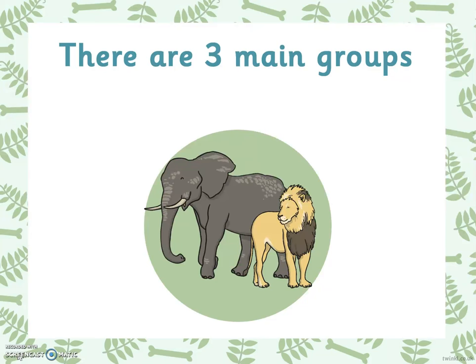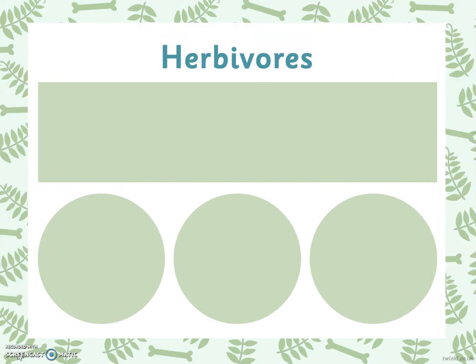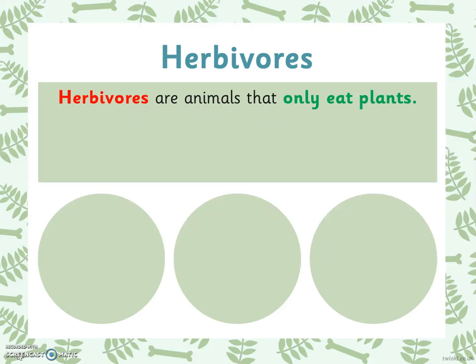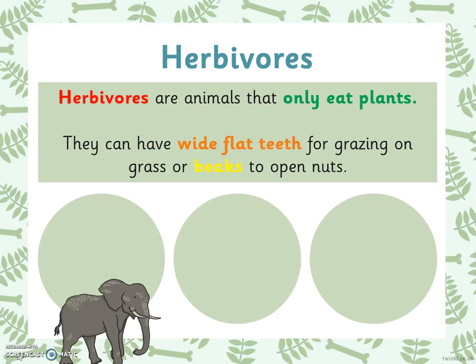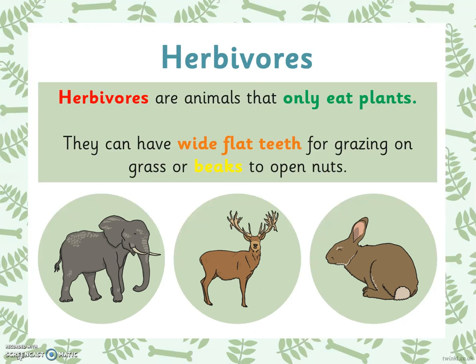There are three main groups. The first group are called herbivores. Herbivores are animals that only eat plants. They can have wide, flat teeth for grazing on grass or beaks to open nuts. Here are some different herbivores. All of these animals only eat plants.